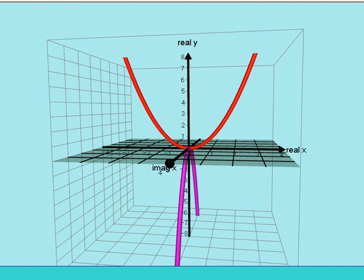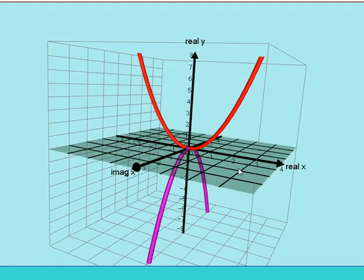So if we put on these complex values, we get another parabola underneath the basic parabola, but at right angles to it. I'll just rotate it so we can see it more clearly.